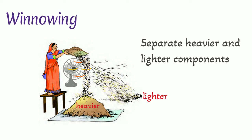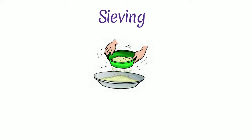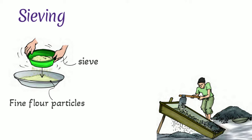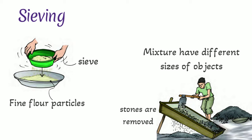Fourth, sieving. Sieving allows the fine particles to pass through the holes of the sieve while the biggest impurities remain on the sieve. For example, in a flour mill, impurities like husk and stones are removed from wheat before grinding it. Mainly, sieving is used when components of a mixture have different sizes of objects.